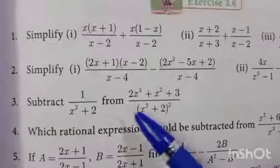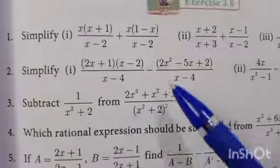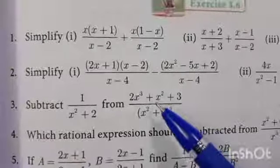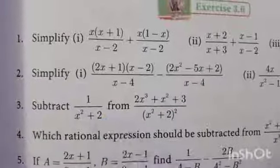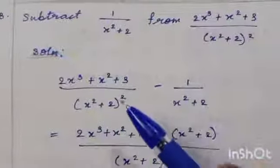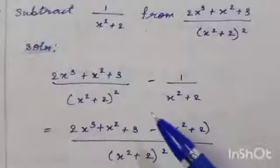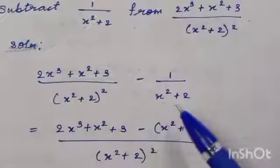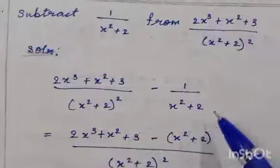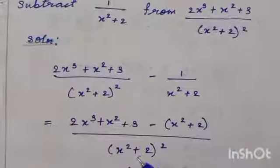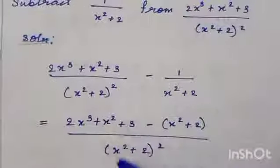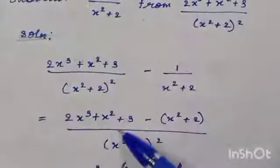From what is given, this first expression is subtracted from this expression — so it is this expression minus this expression. First, rewrite the given problem, then you have to take an LCM. For LCM you have to compare the denominators. Here (x-squared plus 2) whole square, and here (x-squared plus 2). The common denominator, the LCM, is (x-squared plus 2) whole square. Since the first fraction already has this denominator, just write the numerator.